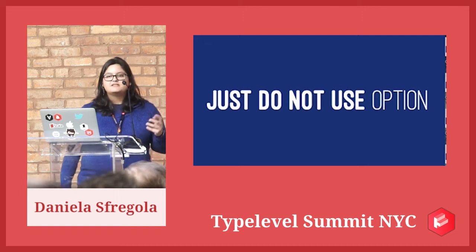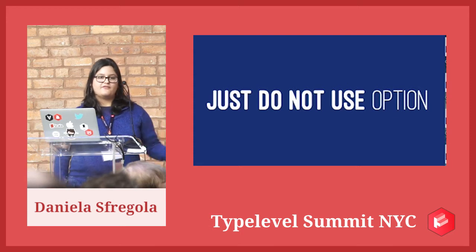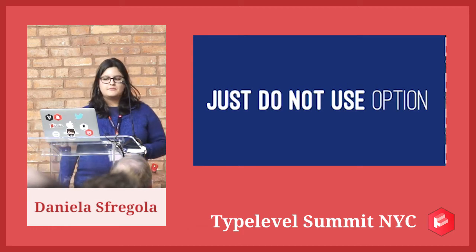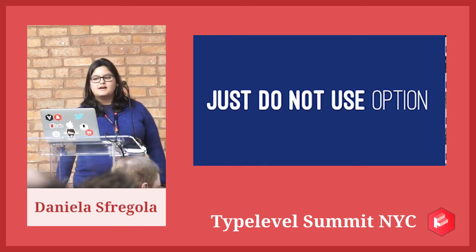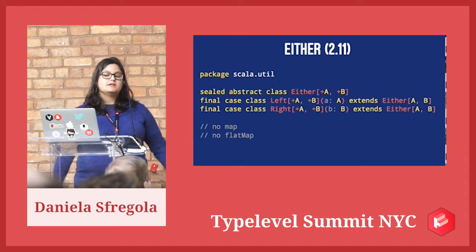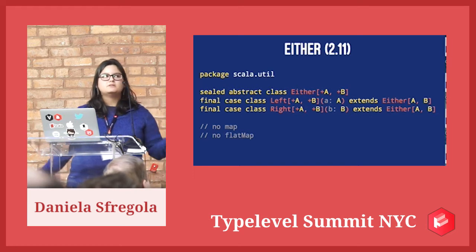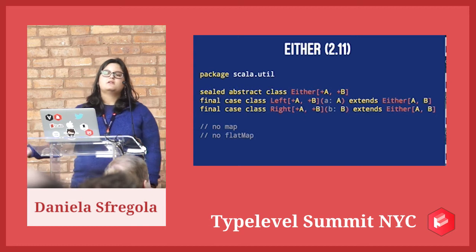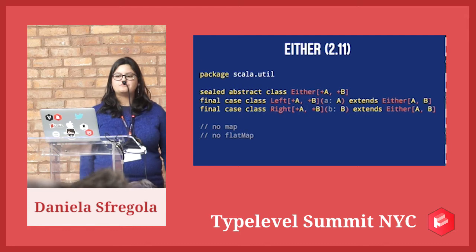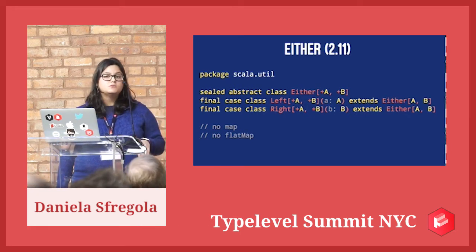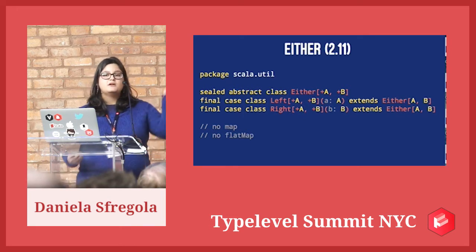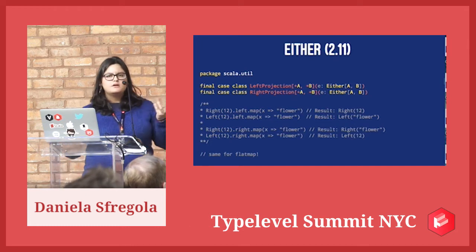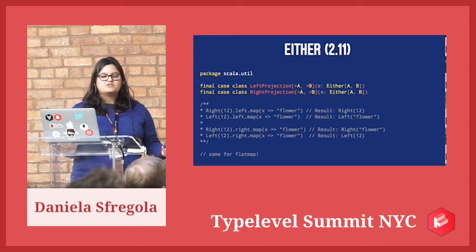What we want to do is tell exactly our consumer of our API what went wrong. We don't want to simply say yes it's good or no it's bad. We look around and discover another type in Scala 2.11 called Either. This could kind of make sense - Either will return a valid value or it won't work and will return whatever problem there is. But Either in Scala 2.11 doesn't have a map or a flatMap, so we cannot write a for comprehension loop. What we have instead is something called left projection and right projection.